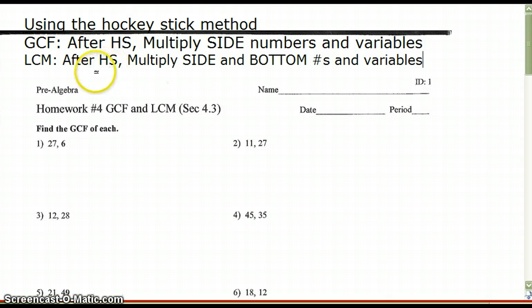Now shown above here, I did list that after the hockey stick method is used, we would multiply side numbers and variables if they apply. And for lowest common multiple, we multiply the side and the bottom numbers and variables after the hockey stick method is used.